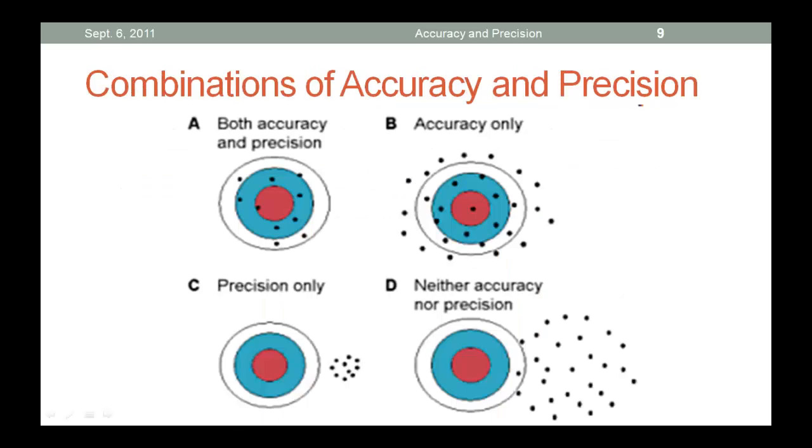You need to combine both accuracy and precision to have good measurements. Look closely at this chart. Notice how you need both to have good measurements. If you need more time to examine this, please pause.